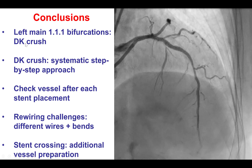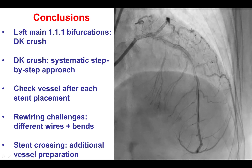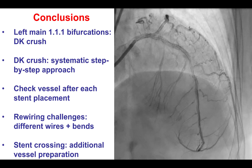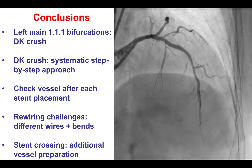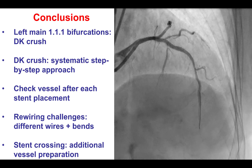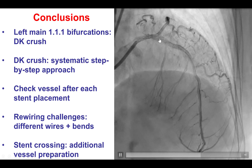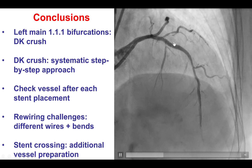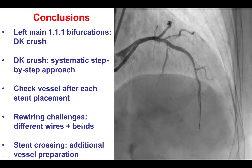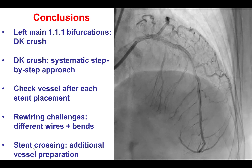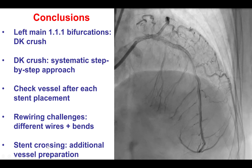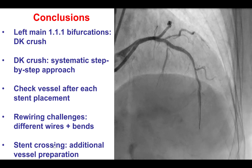In summary, the DK crush remains, at least in my opinion, the preferred technique for treating complex left main bifurcations such as the Medina 1-1-1 bifurcation in this case. It does require a systematic approach with 17 steps, each needing to be done sequentially and methodically. After stents are placed it is important to ensure a good result — here we had issues after both stents: the circumflex stent was complicated by distal edge dissection requiring another stent, and the LAD stent had residual disease also requiring another stent. The two key difficulties with DK crush involve rewiring the side branch and crossing into it with balloons and equipment, addressed by using different wires, a microcatheter, or sequentially sizing up balloons until delivery is achieved.